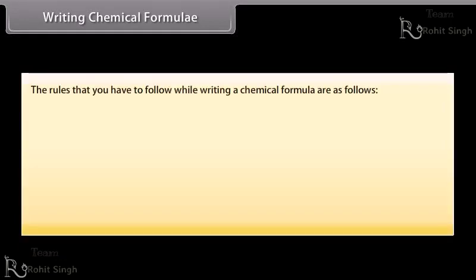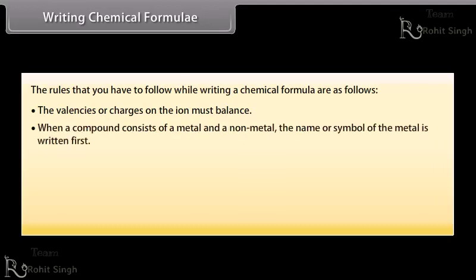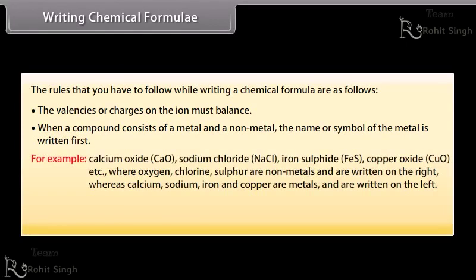The rules that you have to follow while writing a chemical formula are as follows. The valencies or charges on the ion must balance. When a compound consists of a metal and a non-metal, the name or symbol of the metal is written first. For example: calcium oxide (CaO), sodium chloride (NaCl), iron sulfide (FeS), and copper oxide (CuO).